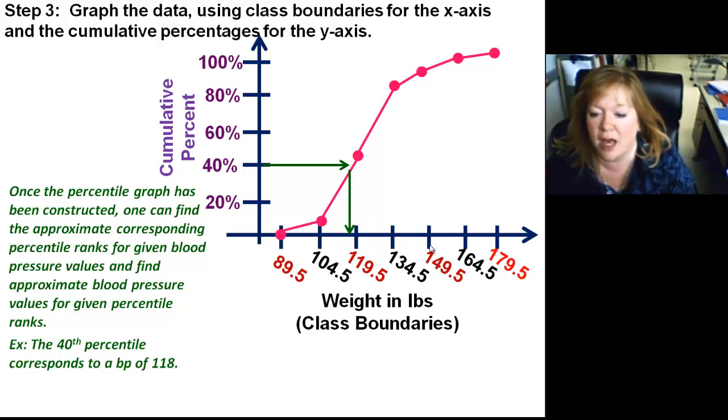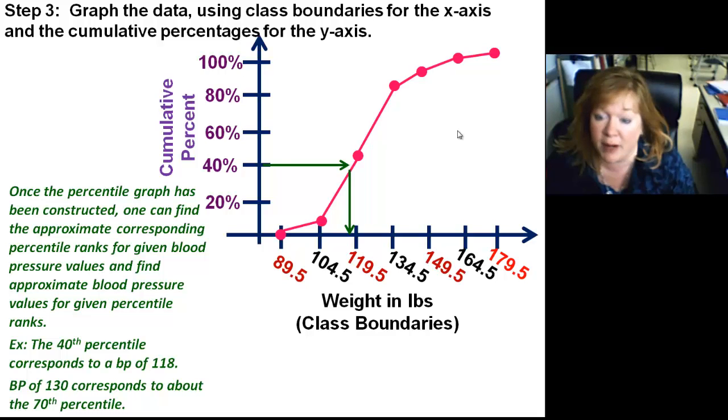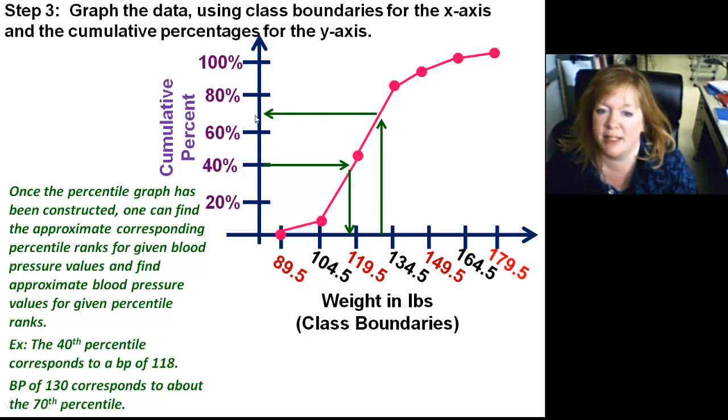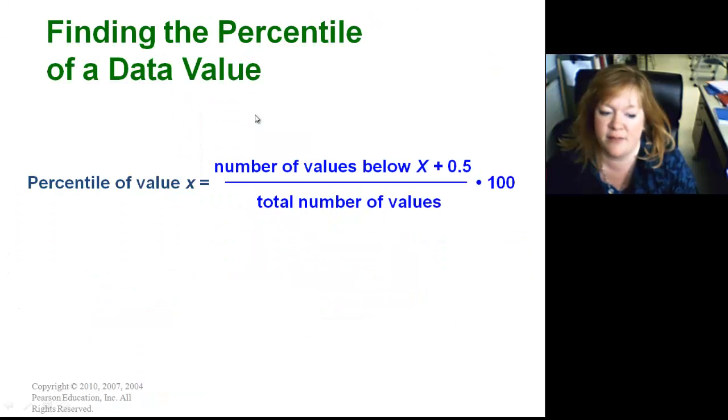I can also say my blood pressure is 140 or 130, and what would be my percentile rank with respect to everybody else? So I would go up from 130 here and then go over to the left and see that that hits about at 70 percentile. So that's how you can use your percentile graphs.